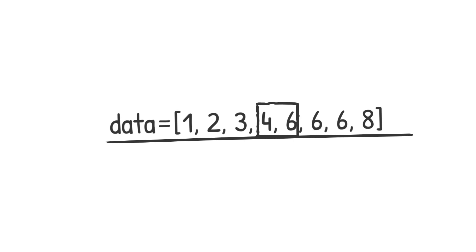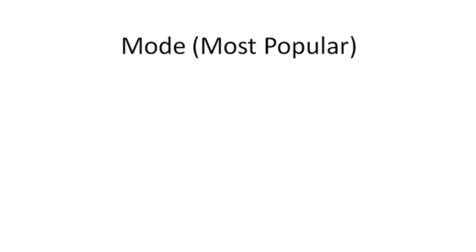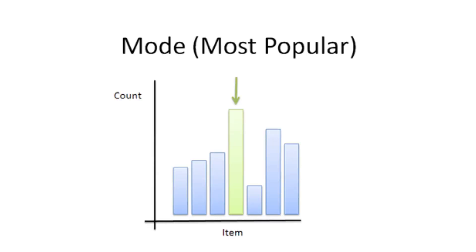Now let's calculate the mode of the original dataset with 9 data points. Mode is the most frequently occurring observation in the dataset. A dataset can have multiple modes if there is more than one value with the same maximum frequency.